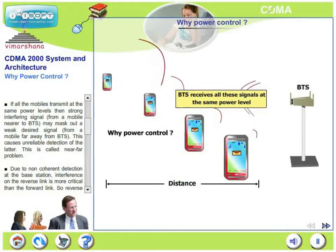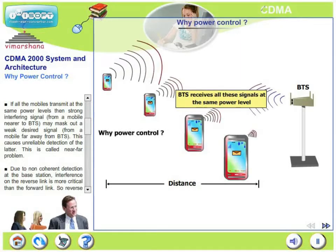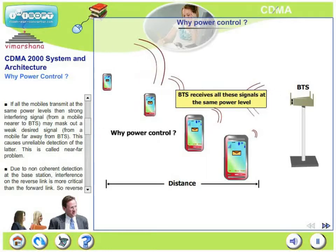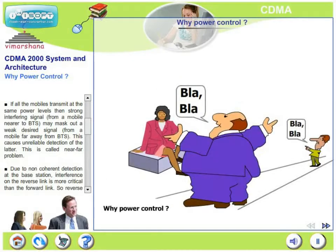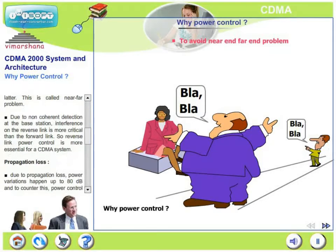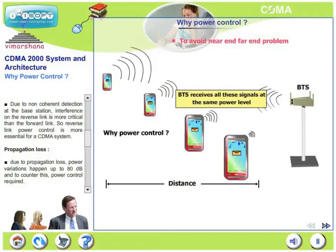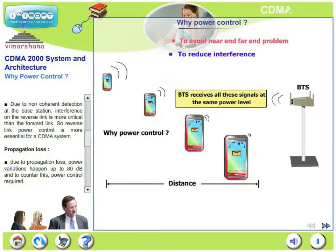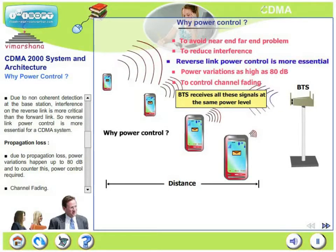If all the mobiles transmit at the same power levels, then a strong interfering signal from a mobile very close to the base station may mask out a weak desired signal from a mobile far away. A desired signal from a far-off mobile is totally masked by an unwanted nearby mobile. This is called the near-far problem. Due to non-coherent detection at the base station, interference on the reverse link is more critical, making reverse link power control much more essential in a CDMA system.